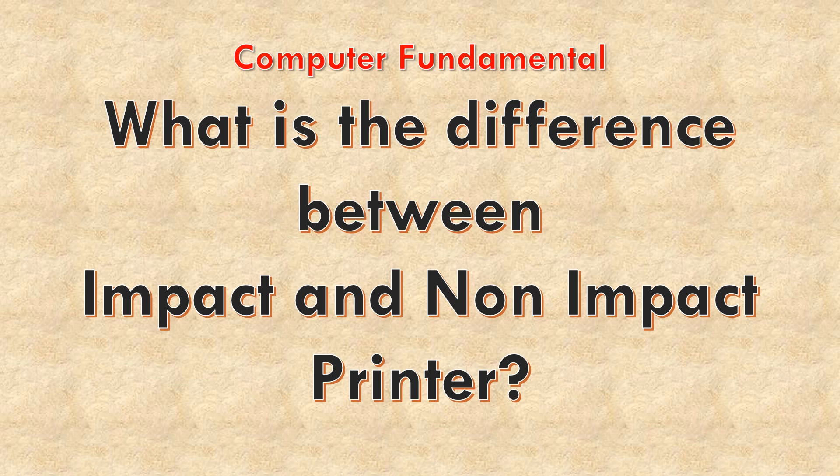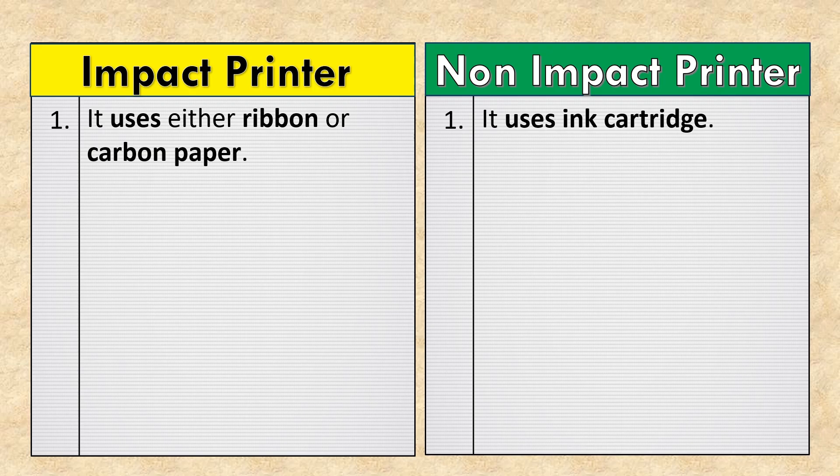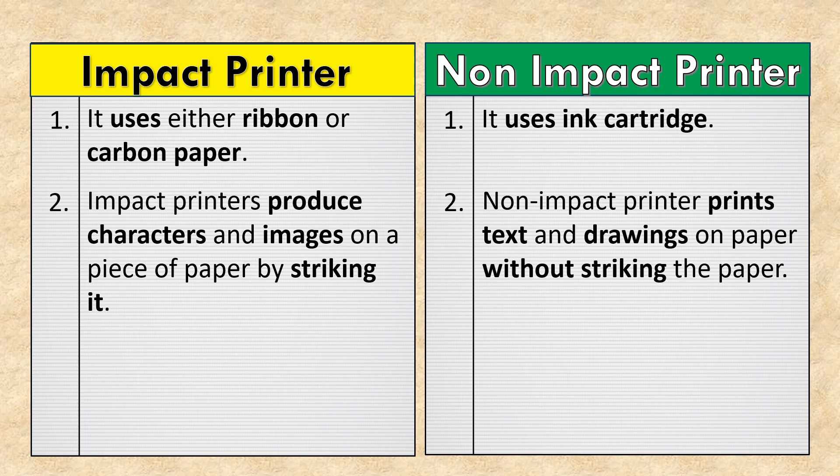In this video, we will discuss the difference between impact and non-impact printers. Impact printers use either ribbon or carbon paper, while non-impact printers use ink cartridges. Impact printers produce characters and images on paper by striking it, whereas non-impact printers print text and drawings on paper without striking it.